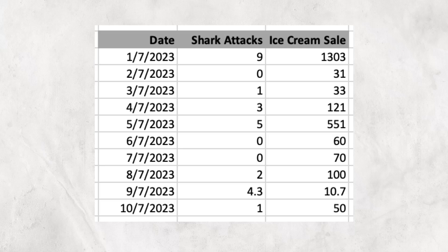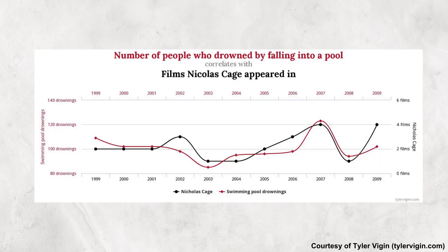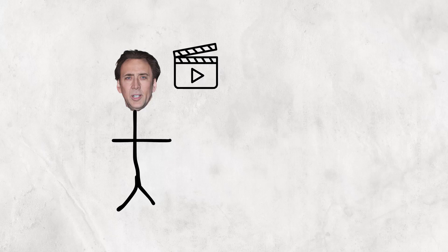You could also do the same with daily shark attacks and daily ice cream sales, turning it into this graph. Or perhaps the number of Nicolas Cage movies published in a year and the corresponding number of drowning deaths. But hold on a second. Does that mean that the more movies Nicolas Cage publishes, the more people end up drowning in that same year?